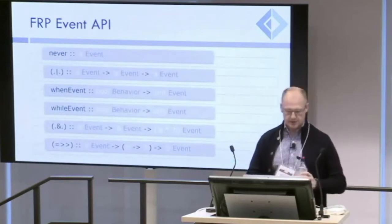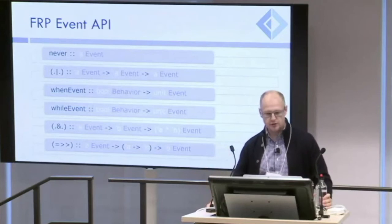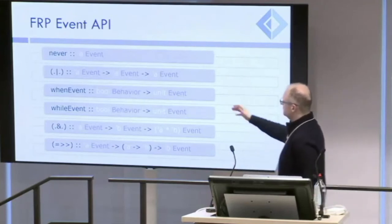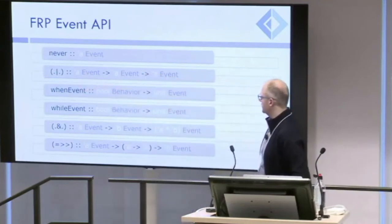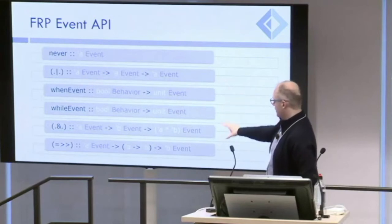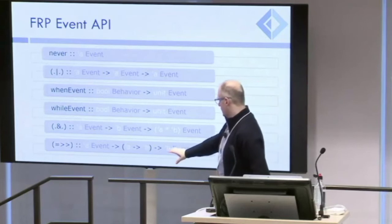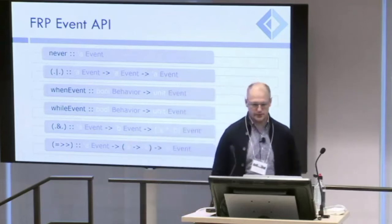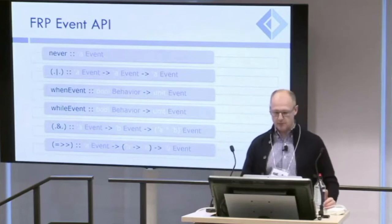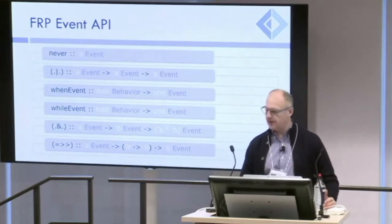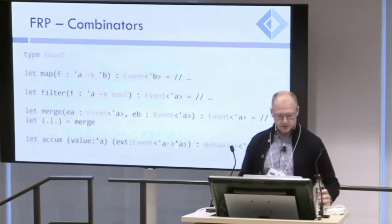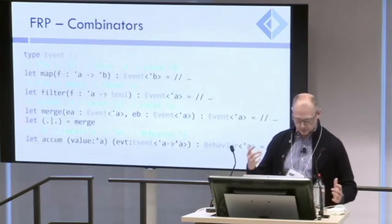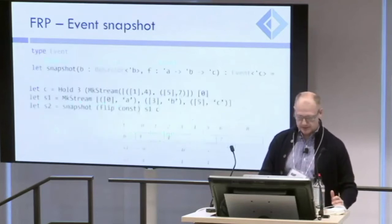For the event API in the modern approach, it's a bit more complex than behaviors. We have the never event — which never happens — the merge event using an infix operator that takes event type A and event type A and returns a new event type A. Interestingly, the last operation has a very strong similarity with fmap, so we could make event a member of the functor class. We have all these combinators which I'll see in action in the code sample.